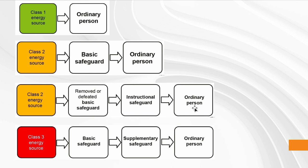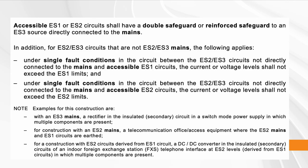The instructional safeguard must also say to make sure children do not access the product when you remove the safeguard. If there is a class 3 (ES3) energy source, this is very serious — it requires both a basic and a supplementary safeguard. Just one basic safeguard is not sufficient to protect an ordinary person from injury.